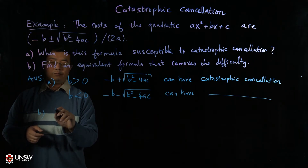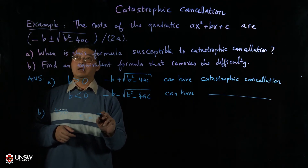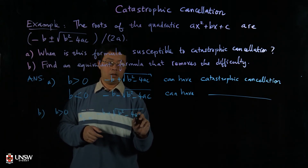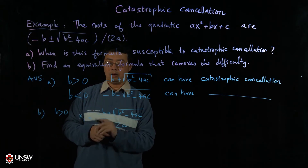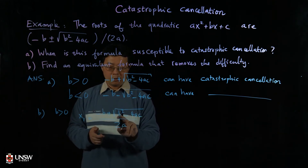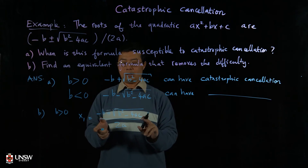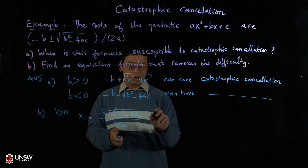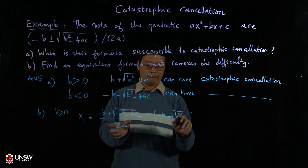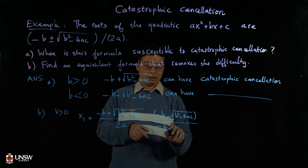So how do we fix the problem? Take the case when b is positive. The first root is (−b + √(b² − 4ac)) / 2a, which could have catastrophic cancellation. In order to remove it, I transform this formula into something equivalent that doesn't have catastrophic cancellation by multiplying by the conjugate of this expression — and since I multiply, I also divide by the same number to keep everything equal.